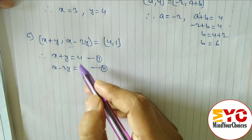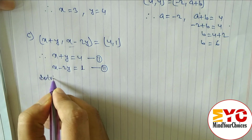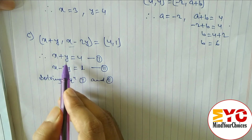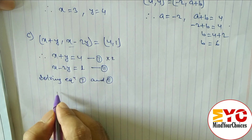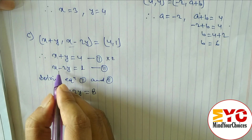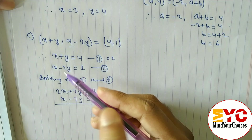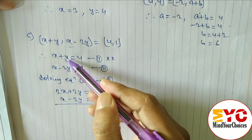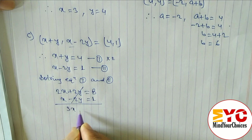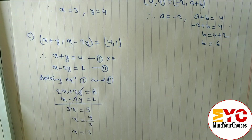We have two equations to solve. To eliminate y, multiply equation 1 by 2: 2x plus 2y is equal to 8. Equation 2 stays: x minus 2y is equal to 1. Adding both equations, the 2y terms cancel, giving 3x is equal to 9, so x is equal to 3.